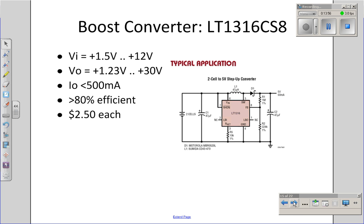An example of a commercial boost converter would be an LT1316 that allows you to convert anything between 1.5 to 12 volts input into 1.23 to 30 volts out, subject to limitation, it can only drive 500 milliamps. The efficiencies, 80% or more.